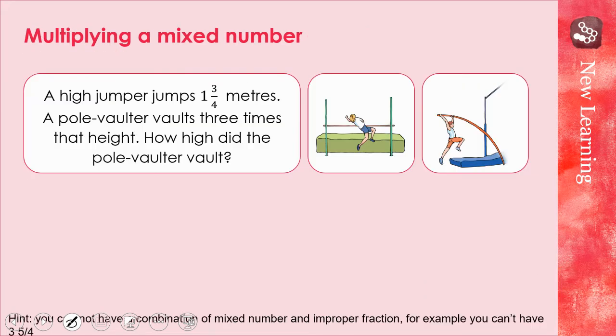Now let's work out something a little bit different. A high jumper jumps one and three quarter meters. A pole vaulter jumps three times that height. How high did the pole vaulter go? What I need to do is find out what three times one and three quarters is. So the first thing I do is multiply the whole numbers by each other. Three multiplied by one is equal to three.